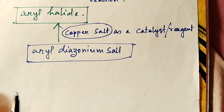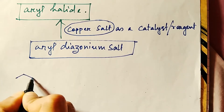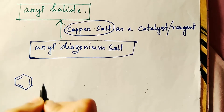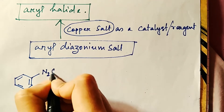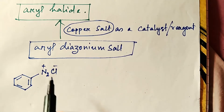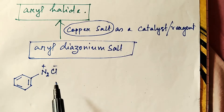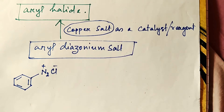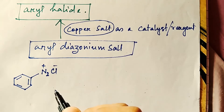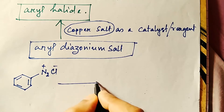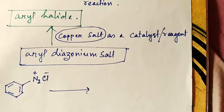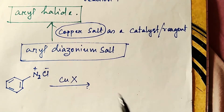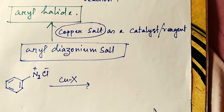Here is a benzene ring with a diazonium salt group: N2Cl, with N2-plus and Cl-minus. Whenever this type of group is present, this is a diazonium salt on benzene — this is an aryl diazonium salt. Now if you use copper salt CuX...